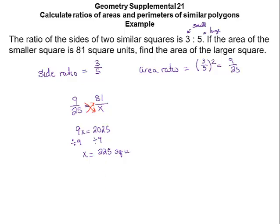So I was able to figure out the area just by taking the ratio of the sides, squaring it so I knew it was an area ratio, and then setting up a proportion with small on top on both sides and large on the bottom. You could also flip it — put large on top — just make sure small is always on the same side throughout.